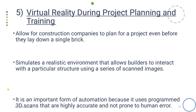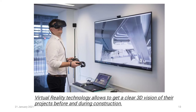Our fifth example is virtual reality during project planning and training. Virtual reality allows us to get a clear 3D view of projects before and during construction. It allows construction companies to plan for a project even before they lay down a single brick, and simulates a realistic environment that allows builders to interact with a particular structure using a series of scanned images. VR is an important form of automation because it uses programmed 3D scans that are highly accurate and not prone to human error. For example, builders can virtually crawl through pipes in the building to determine if they have enough room for repair and maintenance. In the picture, we can see how a person is going through the 3D view of their project prior to the beginning of construction.